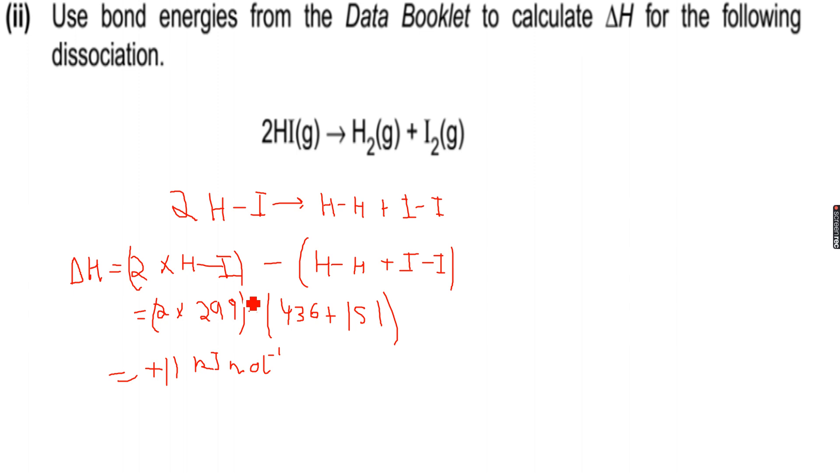They are average bond energies, so they will never give an accurate answer. Sometimes they can ask in the questions why are these values not accurate. These values are not accurate, why are these values of enthalpy change... like we calculated delta H in this reaction, but it is not exactly plus 11 kJ per mole. It can be close to plus 11, but it is not exactly 11. 11 is just an estimated answer because what we have in the data booklet are average bond energies.